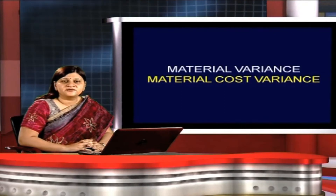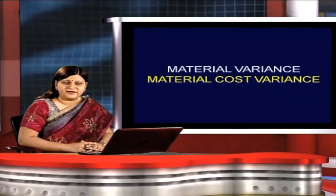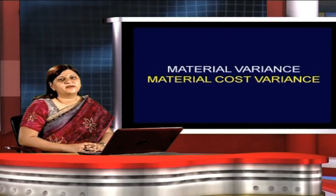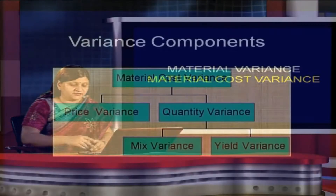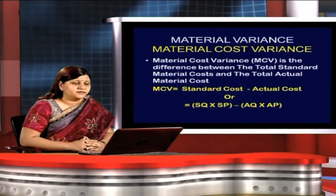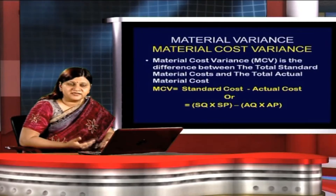Let us now learn the first element of total variance: material variance. Under material cost variance, price and usage are to be considered. Material cost variance has two sub-variances — price variance and quantity variance. Under quantity variance, there are further sub-variances known as mix variance and yield variance. Let us understand how material cost variance occurs and what it signifies.